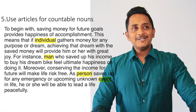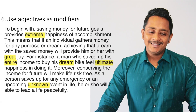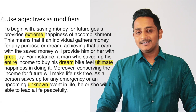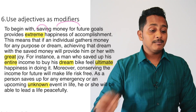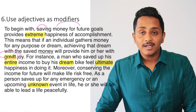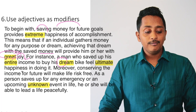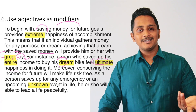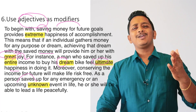Shortcut number six: use adjectives as modifiers — they are very important and come under vocabulary. For example: 'saving money for future goals provides extreme happiness' — the word 'extreme' boosts your vocabulary score. 'Saved money will provide him with great joy.' 'A man who saved his entire income to buy his dream bike.' 'An upcoming unknown event' — 'upcoming' and 'unknown' are adjective modifiers.